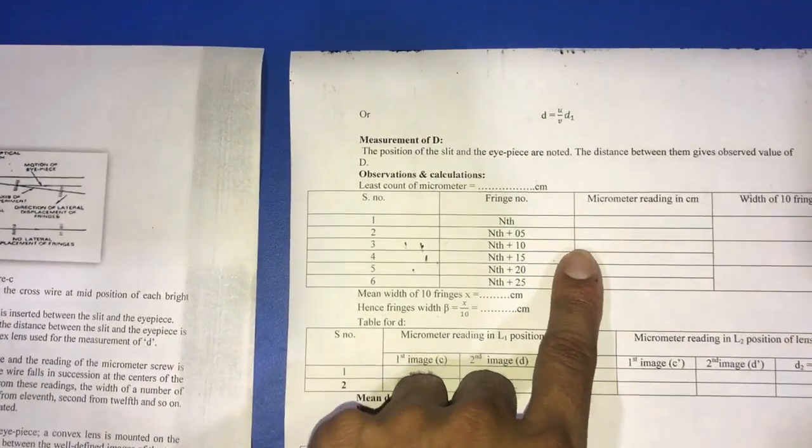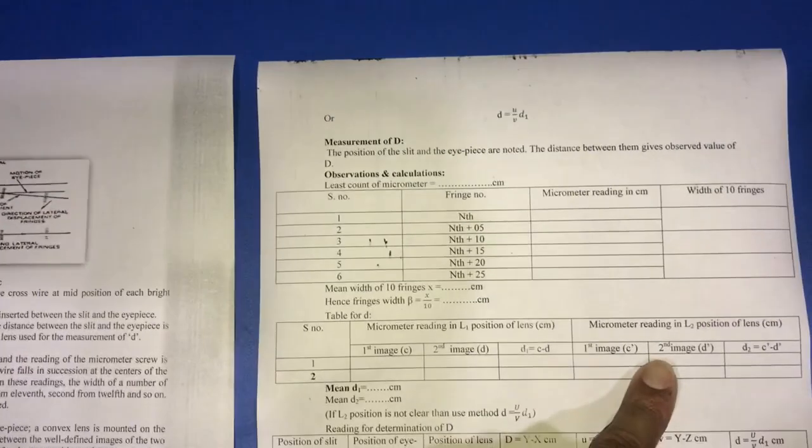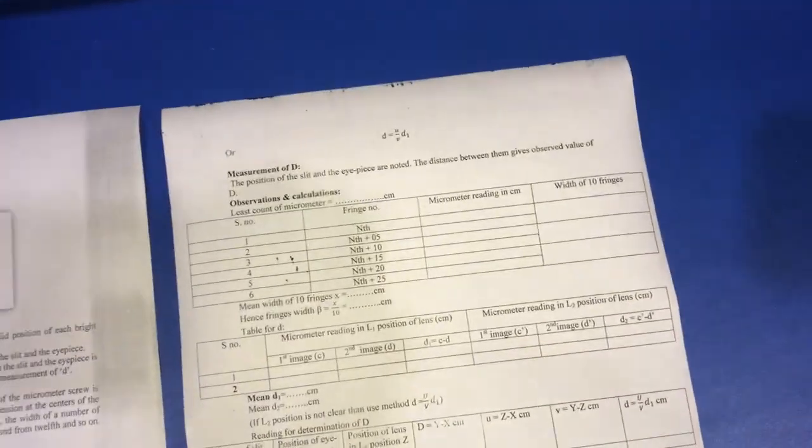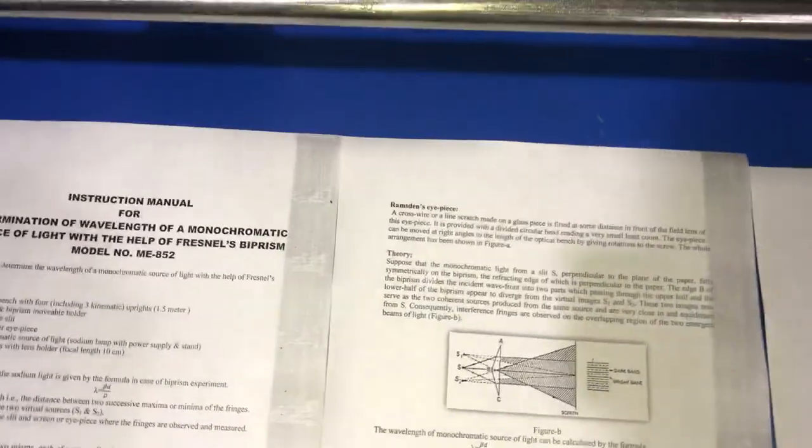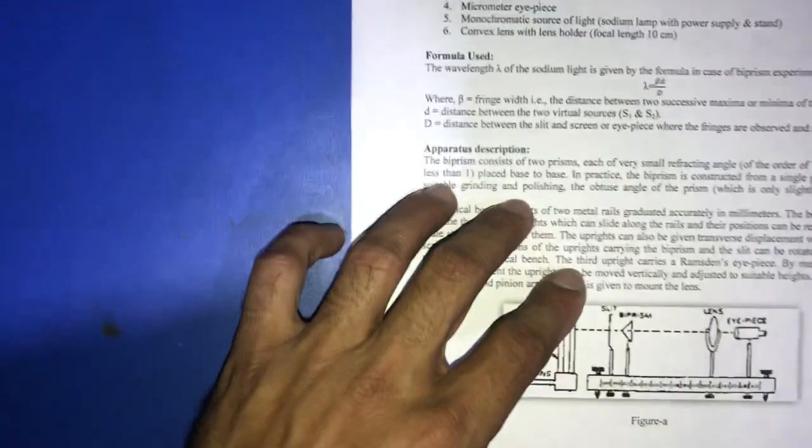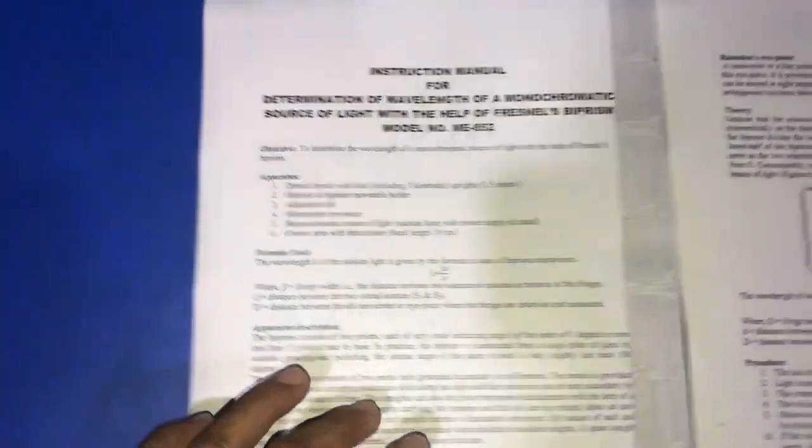Small d is the distance between two sources which is calculated from here. Capital D is the distance between the slit and eyepiece. Thank you.